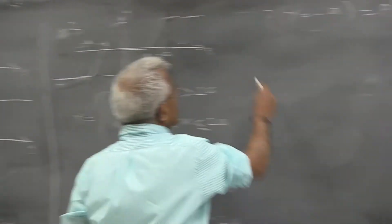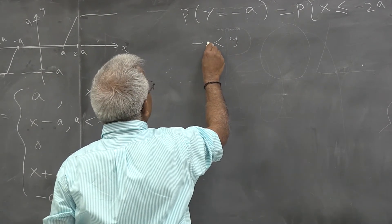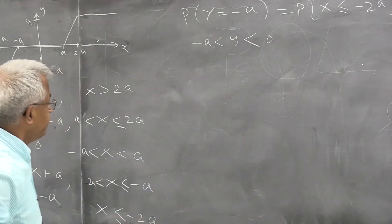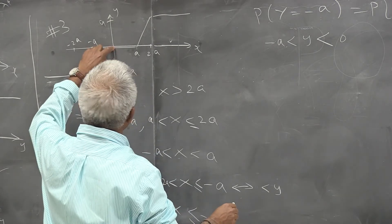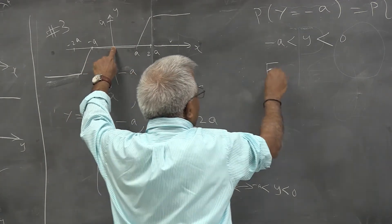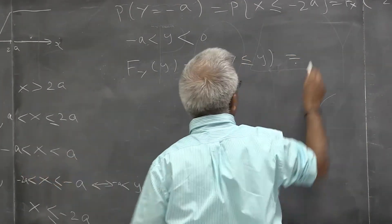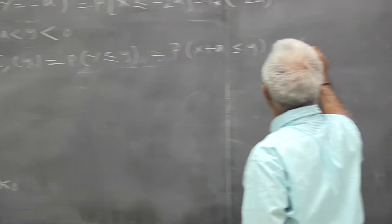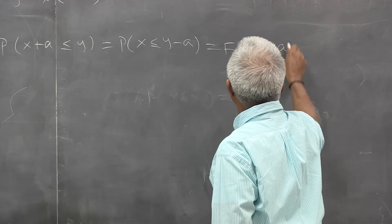In this region, when y is between minus a and zero, FY(y) is the probability of y less than or equal to y. But in this region y is given to be x plus a, less than or equal to y. So this is the probability of x less than or equal to y minus a — that is, the distribution function of x evaluated at y minus a.